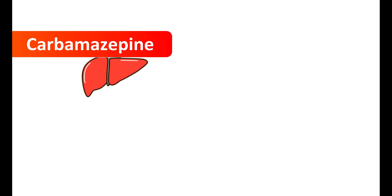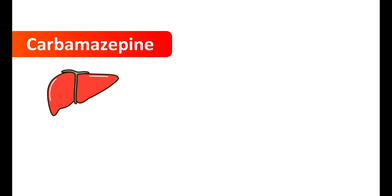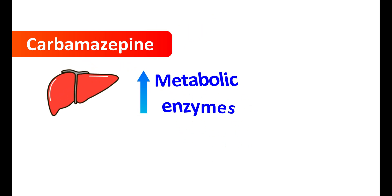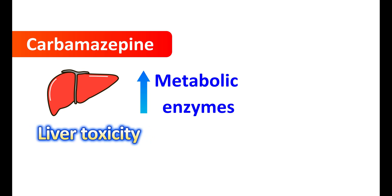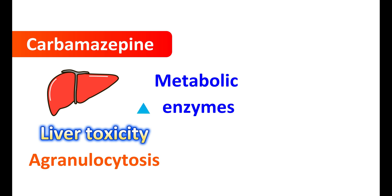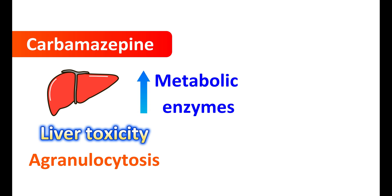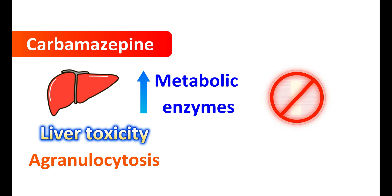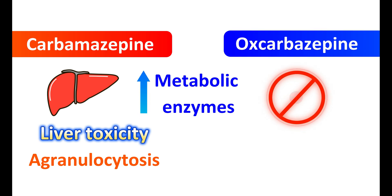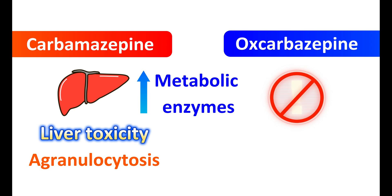Carbamazepine may have an effect on the liver. It is extensively metabolized in the liver and it can induce metabolic enzymes. It can also induce liver toxicity. This medication can also produce agranulocytosis, which is a rare but serious condition resulting in a low count of white blood cells. It can also induce aplastic anemia. Therefore, use of carbamazepine requires monitoring for liver function and WBC counts. These side effects are not associated with oxcarbazepine, so such regular monitoring is not required with oxcarbazepine.